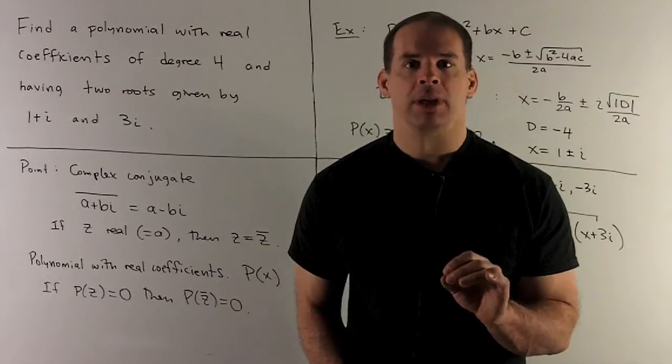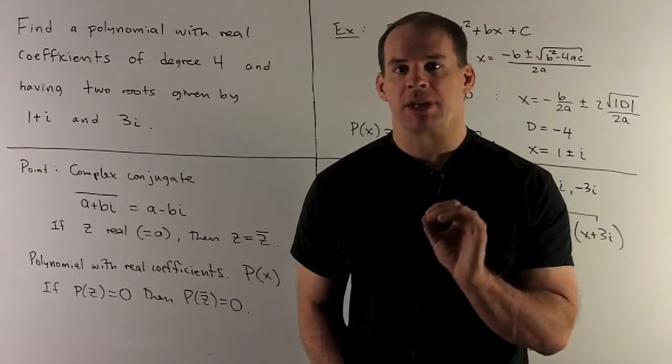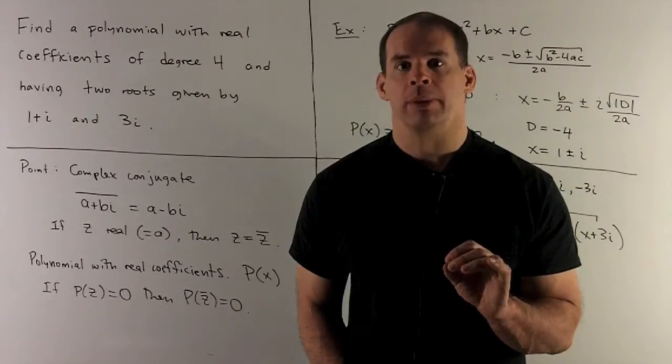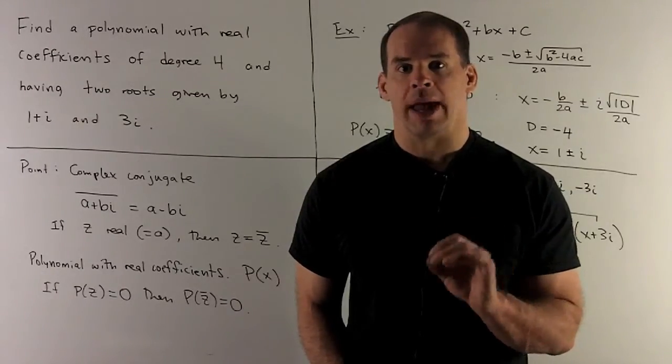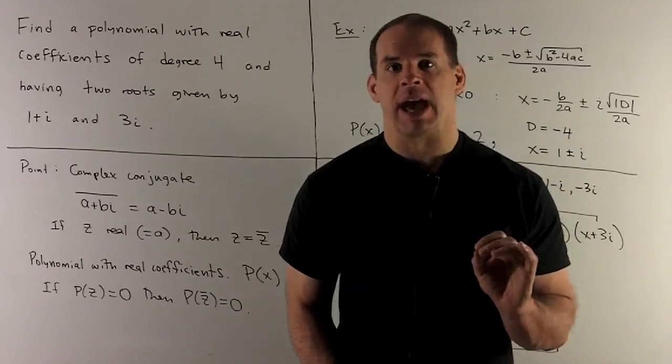The tool we're going to need is complex conjugation. If I have a complex number z equal to a plus bi, where a and b are real, its complex conjugate is going to be given by a minus bi.